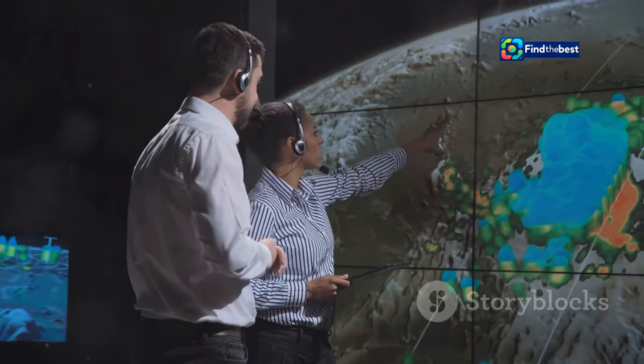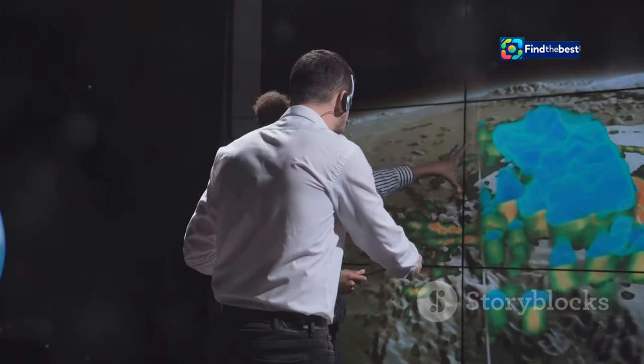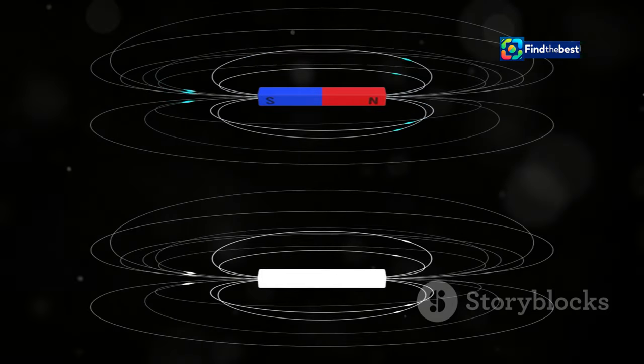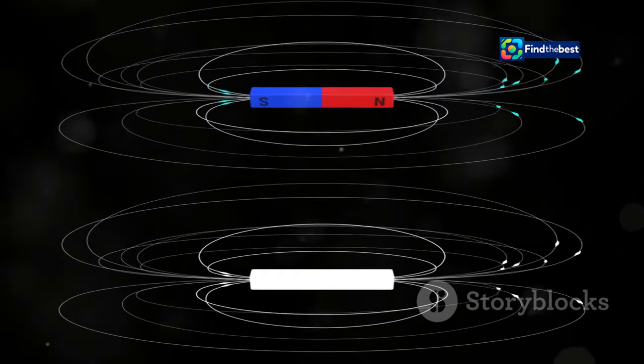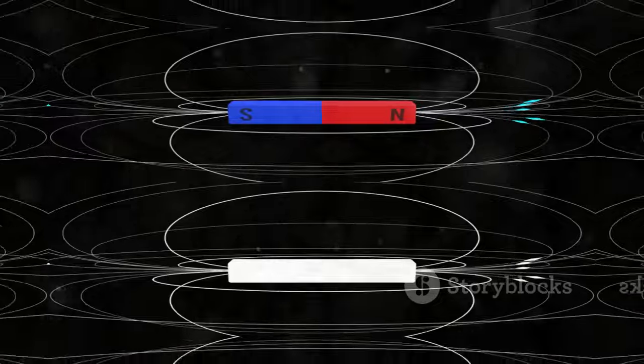By combining data from various sources, scientists can create detailed models of the Earth's magnetic field. These models are essential for understanding the complexities of the field and predicting its future behavior, including the movement of the magnetic north pole.